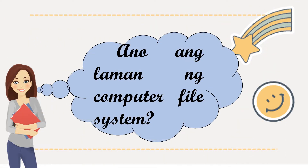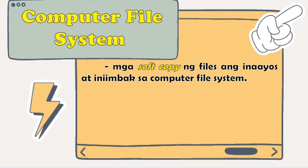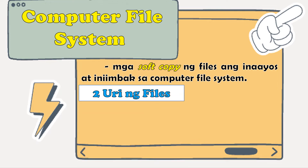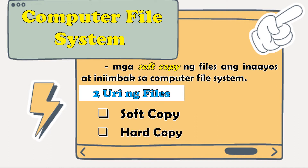Ano ang laman ng Computer File System? Mga soft copy ng files ang inaayos at iniimbak sa Computer File System. Merong dalawang uri ng files: una ay ang soft copy at pangalawa ay ang hard copy.